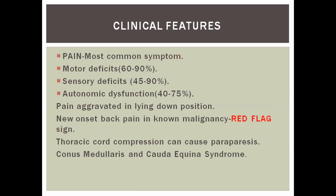The most common symptom a patient presents with is pain. New onset back pain in a known malignancy patient is a red flag. Apart from this, it causes motor deficits, sensory dysfunction, and bladder and bowel dysfunction. The pain is typically aggravated in the lying-down position. Thoracic cord compression can lead to paraparesis and paraplegia. Involvement in the lumbar region can cause conus medullaris and cauda equina syndrome.